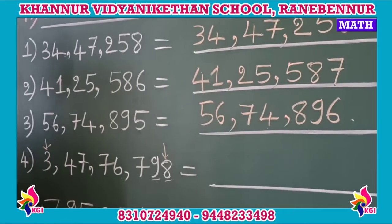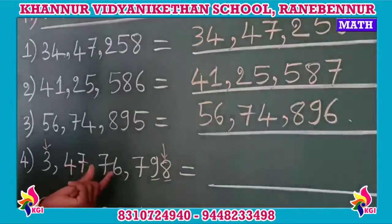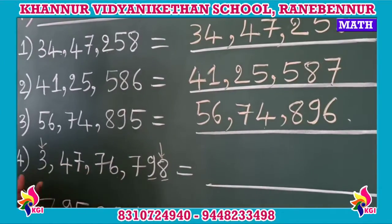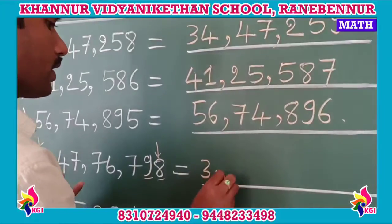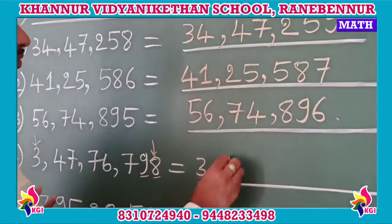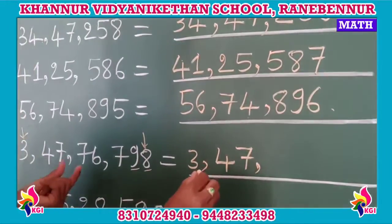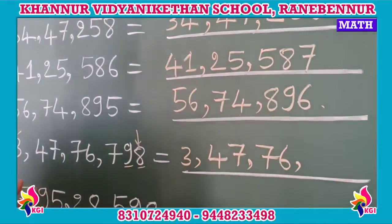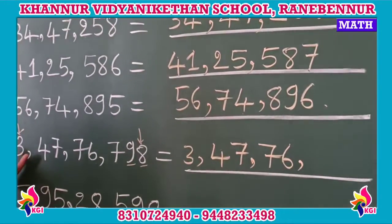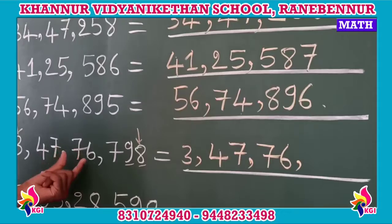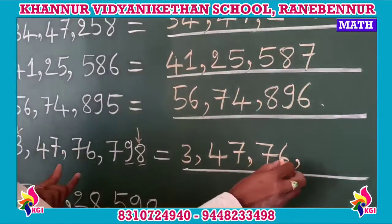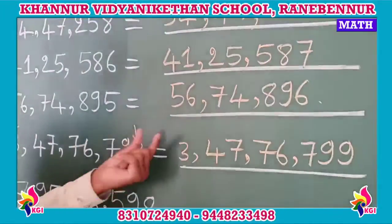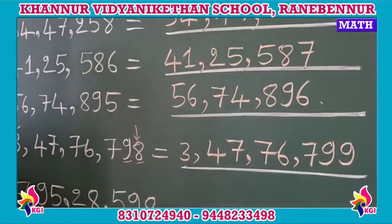So the number is 3 crore, 47,076,798. What is the successor of this given number? The successor is 3 crore, 47,076,799.